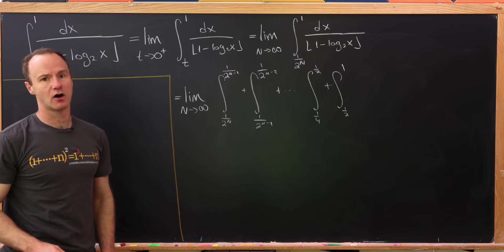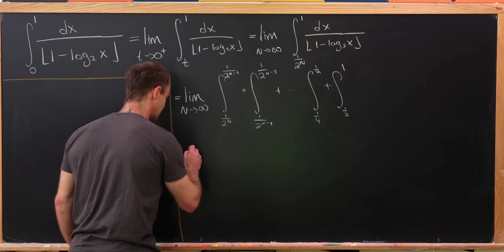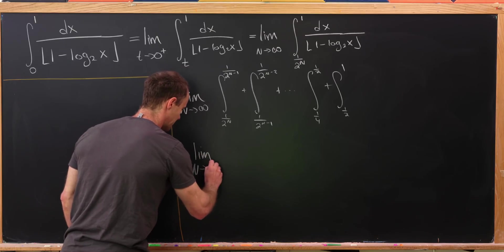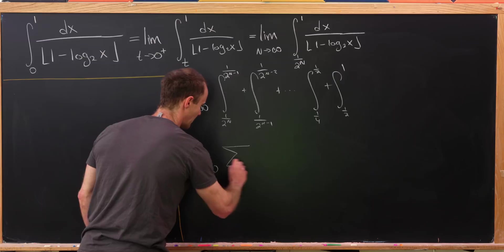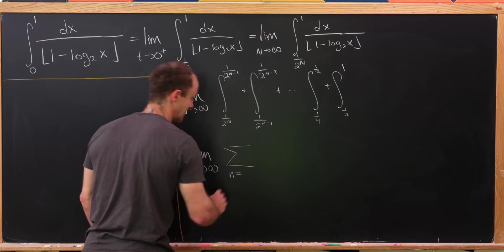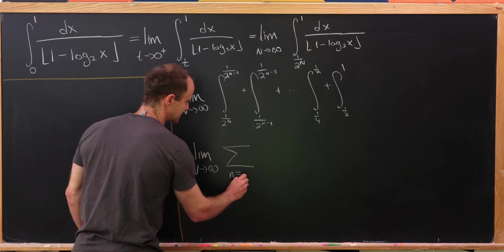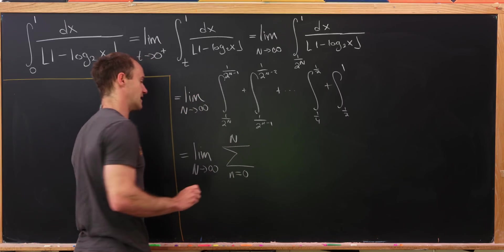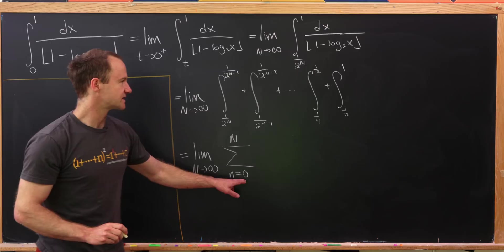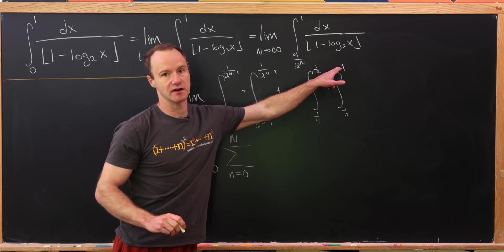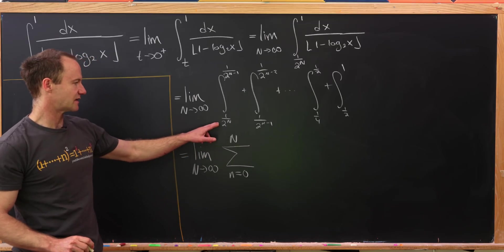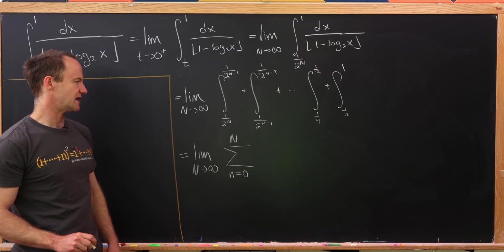But I can smoosh that all together into one object, and that's going to look like this. So I'll just bring my limit down as n goes to infinity, and now I'll have the sum as little n goes from, let's see, it'll be 0 up to capital N. So n equals 0 is going to be this thing right here. This will be 1 over 2 to the 0, and n equals capital N will be this term right here. And now that I look at it, I think I need this to be capital N minus 1.